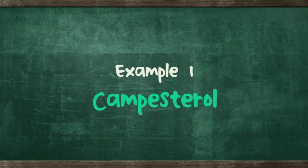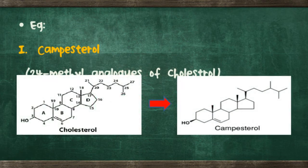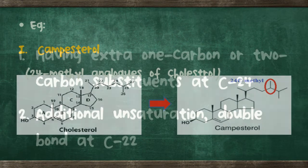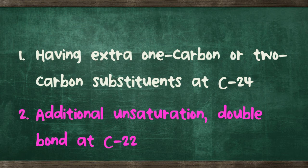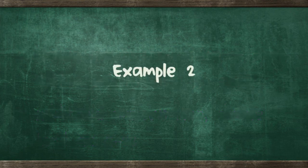Example one: campesterol. From the figure, we can see that campesterol has a methyl group at carbon number 24. The second modification is additional unsaturation — a double bond — at carbon number 22. An example is sitosterol.